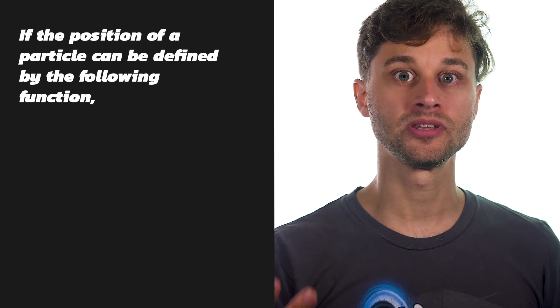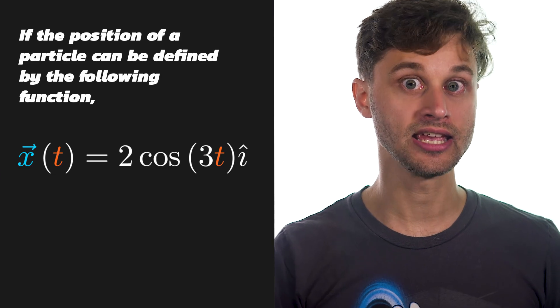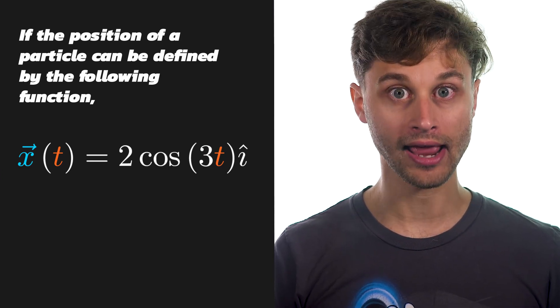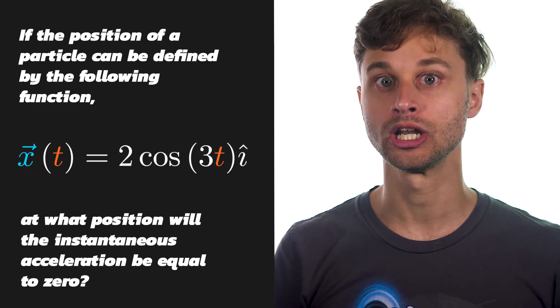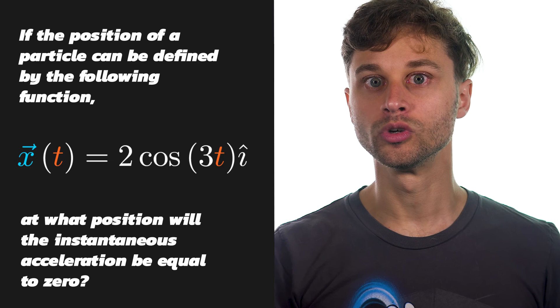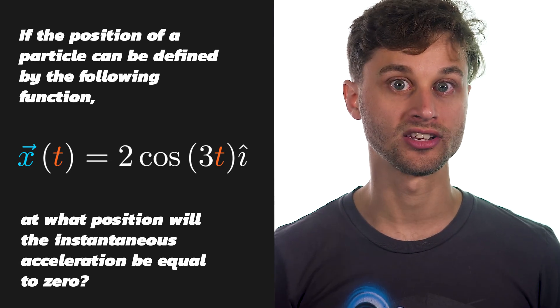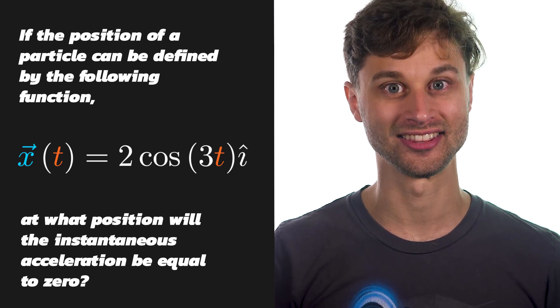In the next episode we'll be taking a look at this problem, but in the meantime why don't you try it out yourself? The question is this: if the position of a particle can be defined by the function x⃗(t) = 2cos(3t) î, at what position will the instantaneous acceleration be zero? We'll need some calculus for this — the derivative of both the sine and cosine functions, as well as the chain rule. Try it out yourself, and I'll see you in the solution.